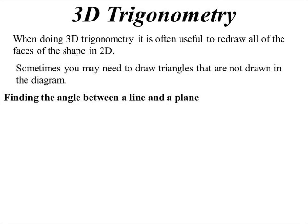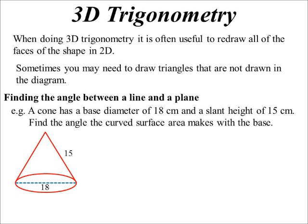So how do we find the angle between a line and a plane? I've got this cone. The diameter of the cone is 18 centimeters. We know the slant height's 15. We want to find the angle the curved surface makes with the base. How's that going to create a triangle? So we think of it in two dimensions. I can chop the cross-section of the cone.